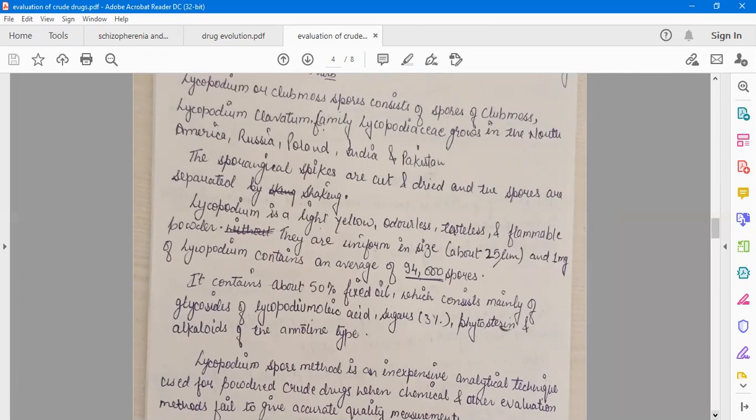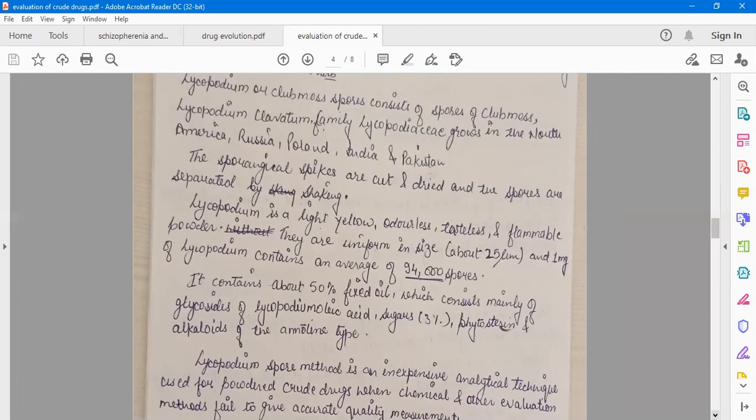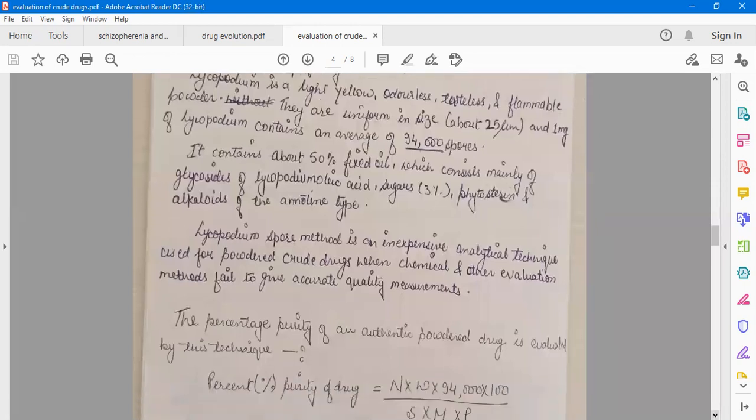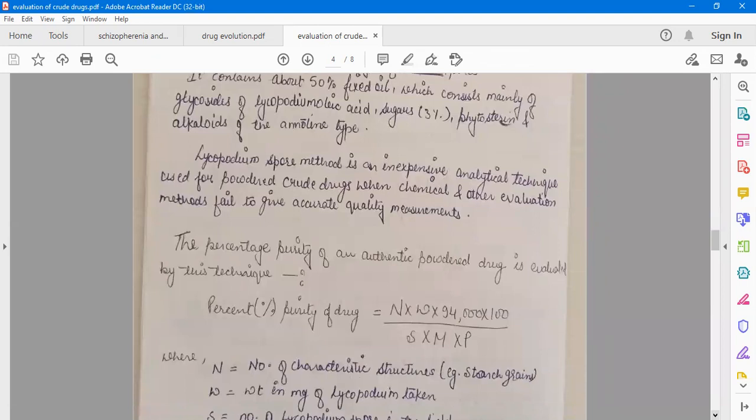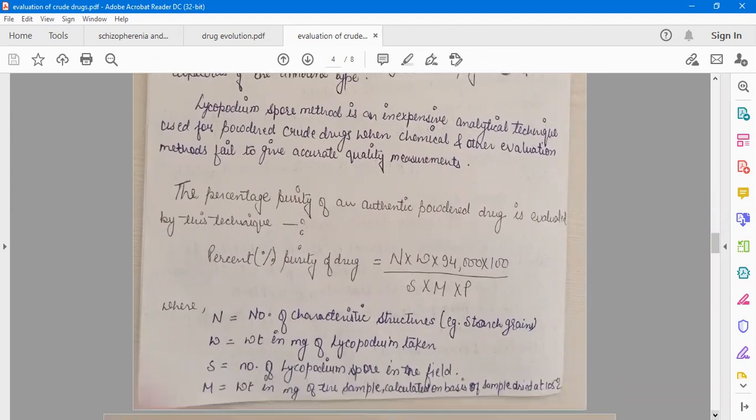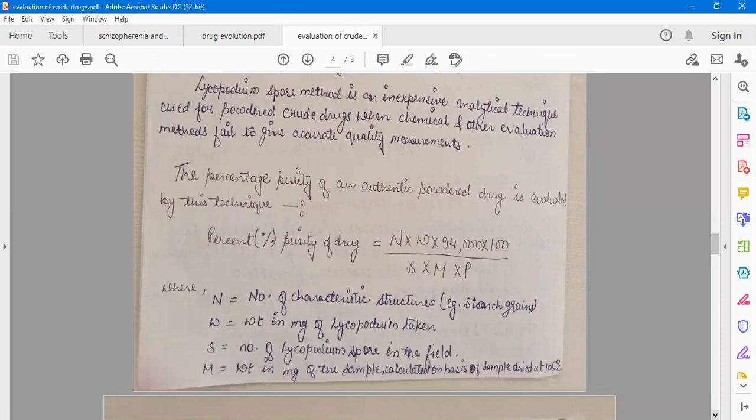Lycopodium spore method is an inexpensive analytical technique used for powdered crude drugs when chemical and other evaluation methods fail to give accurate quality measurements. The percentage purity of an authentic powder drug is evaluated by this technique. The percentage purity of drug can be calculated by this given formula: N into W into 94,000, where N is the number of characteristic structures, W is the weight in milligrams of the lycopodium taken.